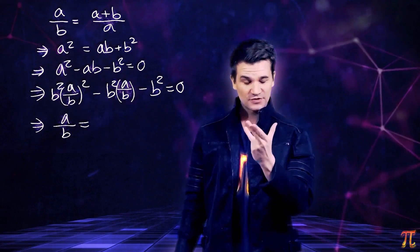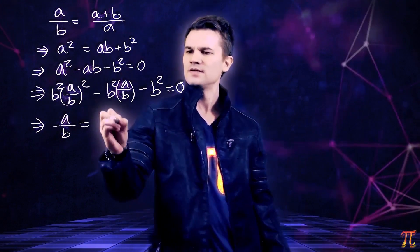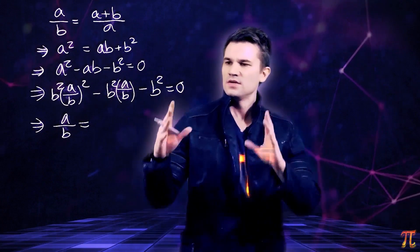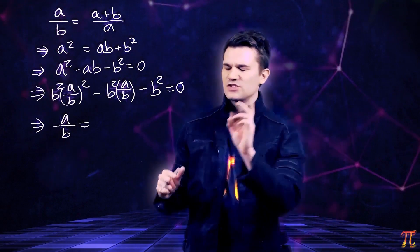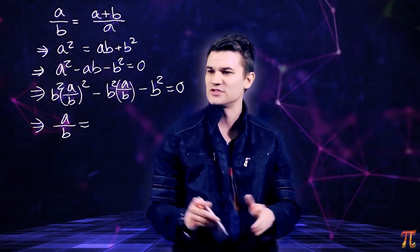Wait, quadratic formula: negative b. So negative b in this case is going to be negative negative b squared, which is b squared. Okay, we're good. Plus or minus the square root of b squared—which is negative b squared squared, which is b to the fourth—minus four times a, the leading coefficient which is b squared, times c which is negative b squared.